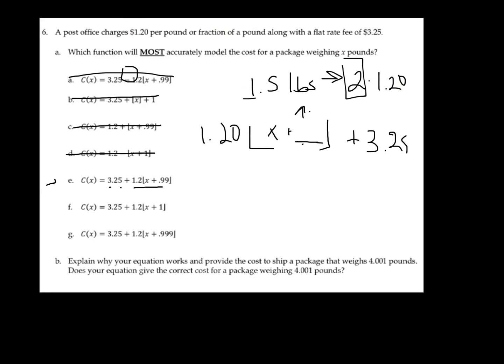Looking at F, we have the flat rate, and then we're multiplying 1.2 by some sort of something, which could potentially be a rounding up of the weight, so we'll keep F as well. And we see the same thing in G. So now we want to think about what is the difference, what's going on here. We'll notice that all of them have the flat fee, so what we're really thinking about is what are we going to use the floor function to do in order to accurately round up.